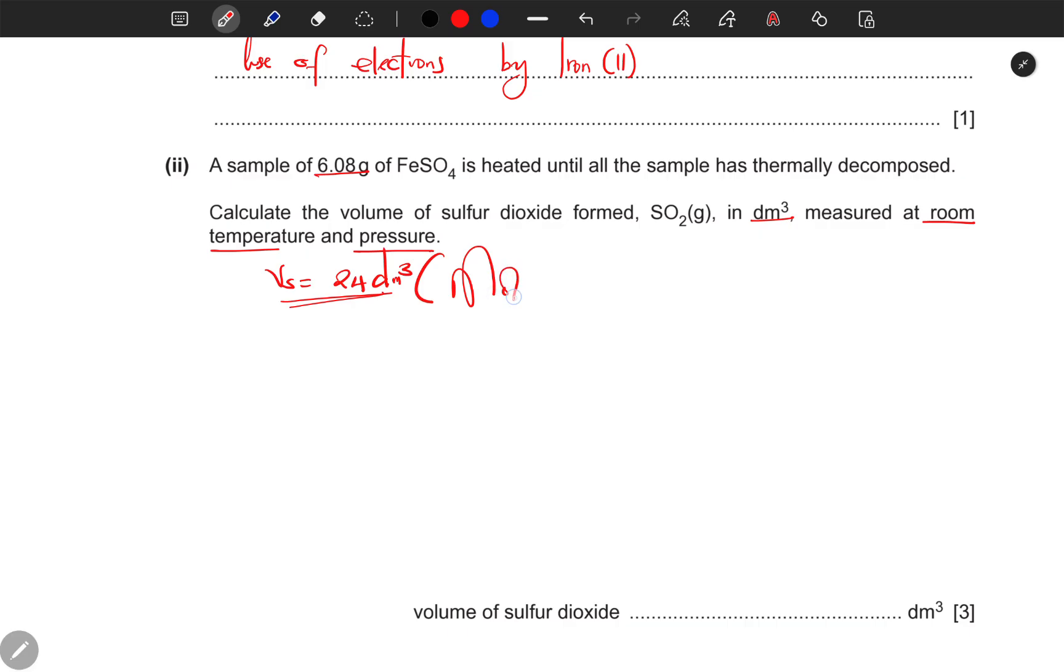How do we find the volume? Number one, I need to find the number of moles of iron(II) sulfate. Number of moles equals mass given over molar mass. So the mass is 6.08 grams. How do we find the molar mass? They have given us iron sulfate. By now we should know how to find the relative molecular mass. This is 56, this is 32, this is 16 times 4. 56 plus 32, oxygen is 16 on the periodic table and there are four of them, so total we're having 152 grams per mole.